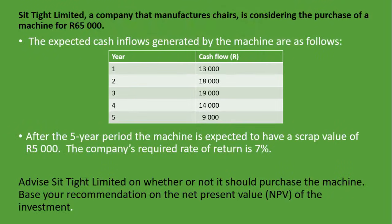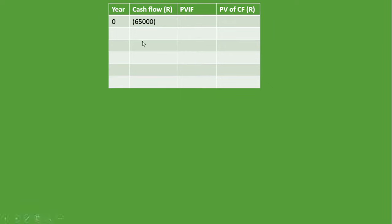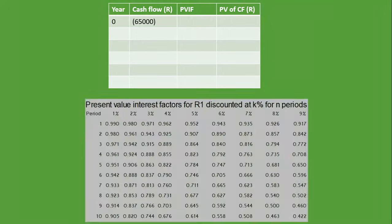We put year zero and the amount is 65,000 rand — the initial investment for the machine purchase. Since we are investing now, we do not need to discount that amount. Now let's look at which table to use for the present value interest factor. This is the table you will most likely be given — this is just a snippet, not the complete table.